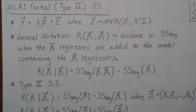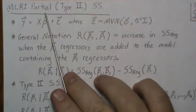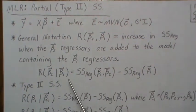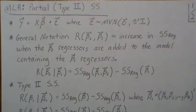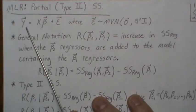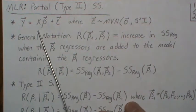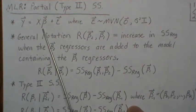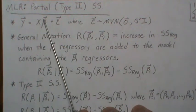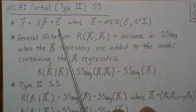In this video we're in the multiple linear regression setting and we're going to look at the type 2 sum of squares. Some call it the partial type 2 sum of squares. We're in the multiple linear regression setting, which is y equals x beta, where this has beta 0 through beta k, and this is the error terms.